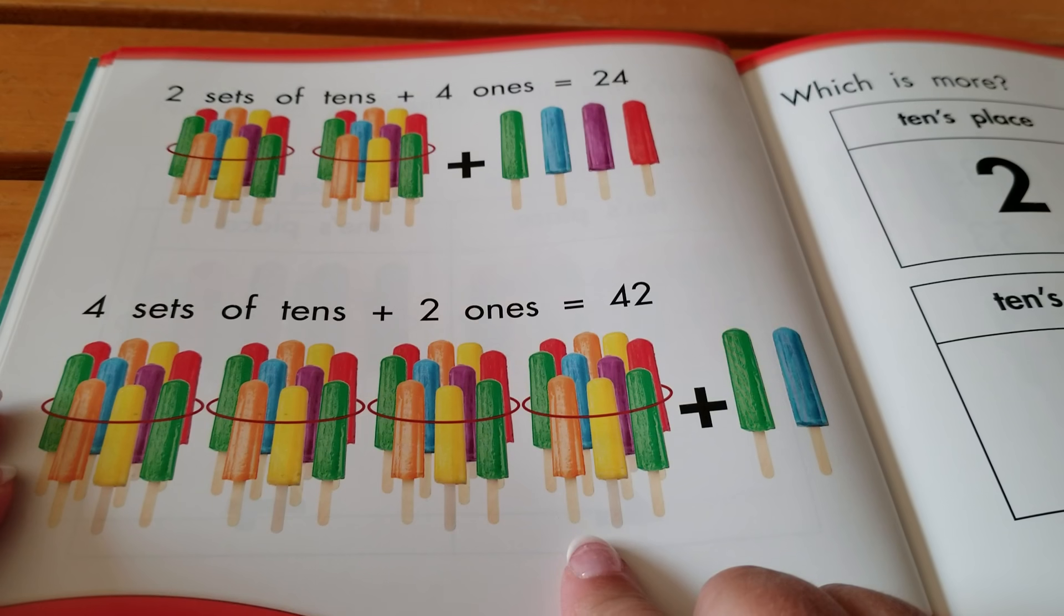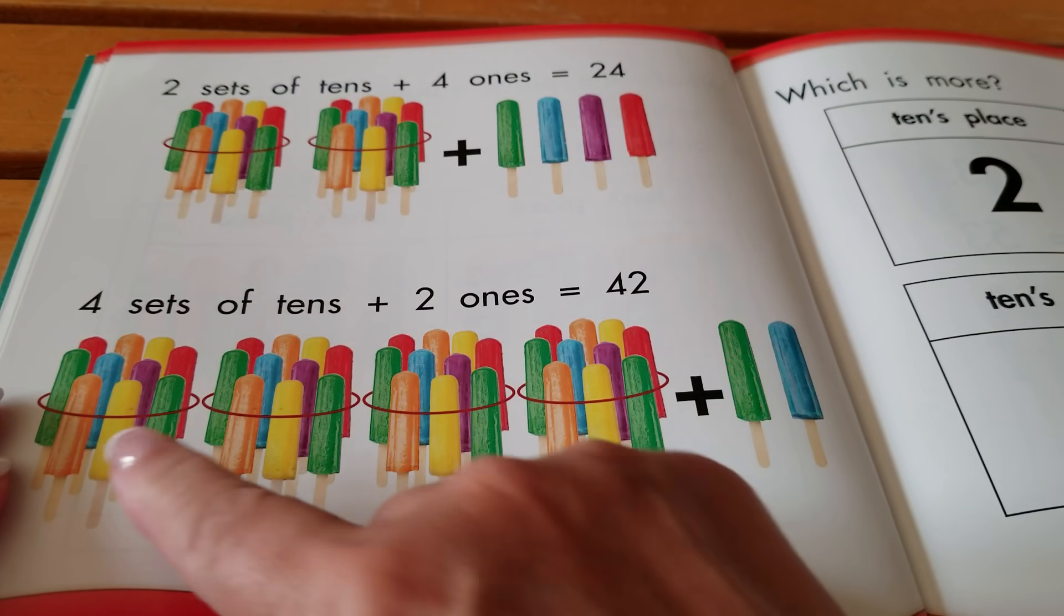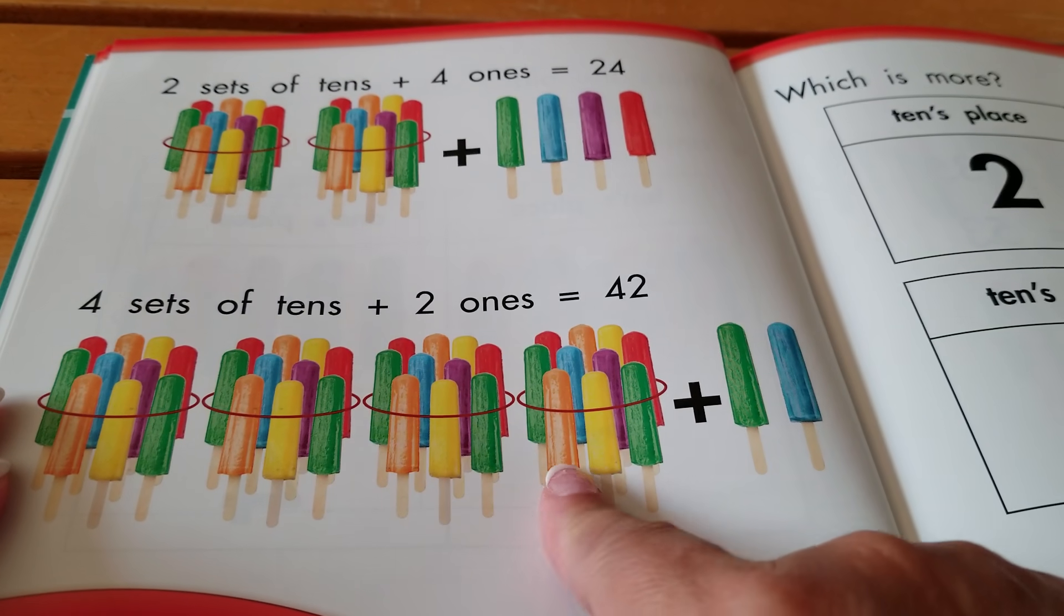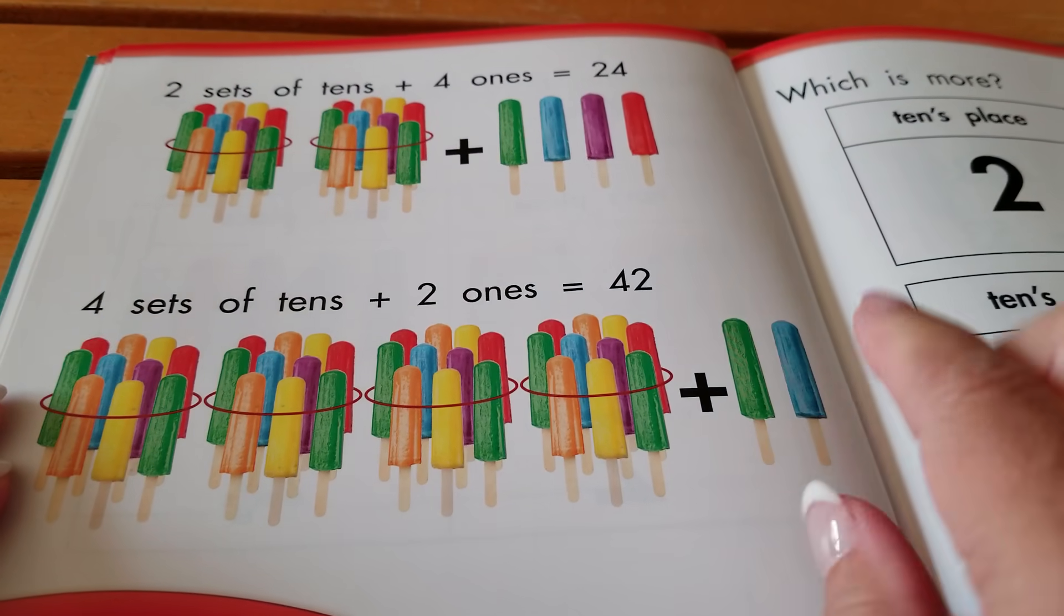Four sets of tens plus two ones. Let's count them. Ten, twenty, thirty, forty, forty-one, forty-two, forty-two.